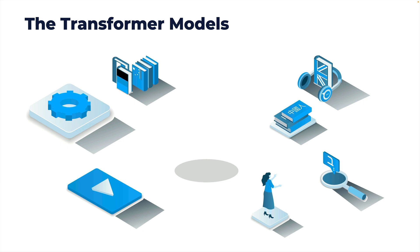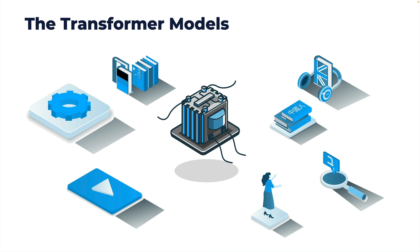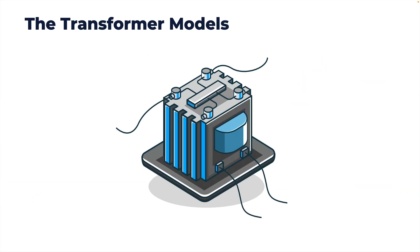At their core, LLMs are neural networks with an intricate architecture called the transformer architecture, designed to handle sequential data, making it ideal for tasks involving language. It is called 'transformer' because it fundamentally transforms the input into something more meaningful — don't confuse this with the electrical transformer. The transformer architecture essentially consists of multiple layers with two main components: the self-attention mechanism and feed-forward neural networks. They are called transformers because they are very good at transforming one sequence of data into another.